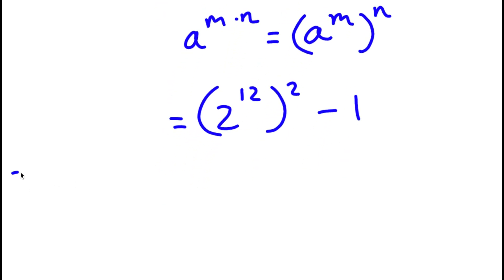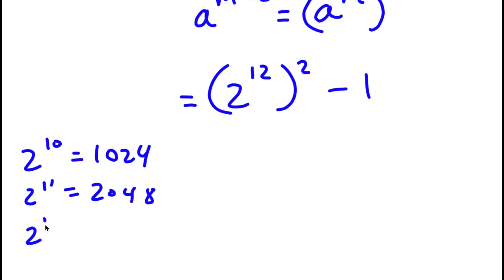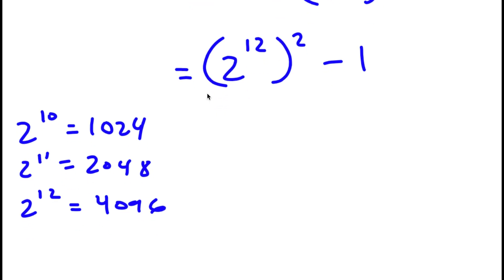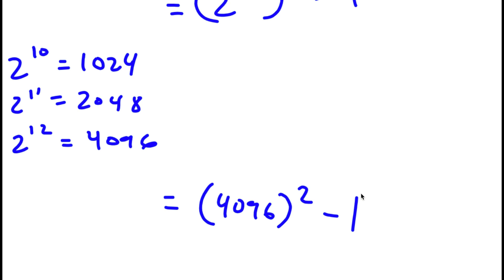Now we know that 2 to the power of 10 is 1024. So 2 to the 11 is double of 1024, which is 2048. And 2 to the power of 12 is double of 2048, which is 4096. So now I have 4096 squared minus 1.